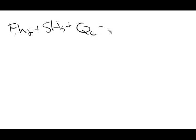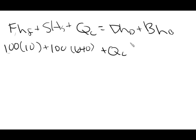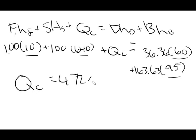Next is the overall energy balance: F·H_F + S·H_S + Q_C = D·H_D + B·H_B. Plugging in: 100×10 + 100×640 + Q_C = 36.36×60 + 163.63×95. Solving gives Q_C = 4.72 × 10⁴ kcal/min.